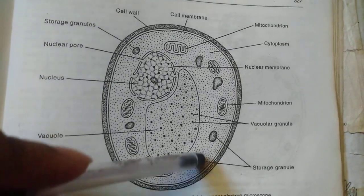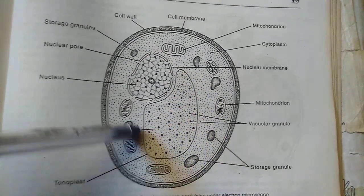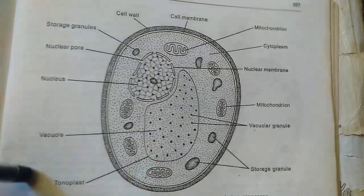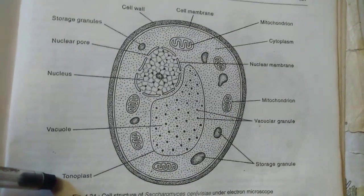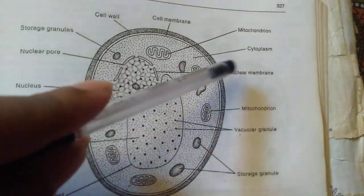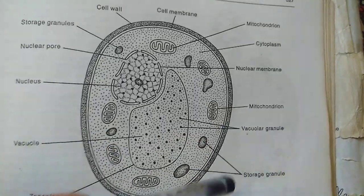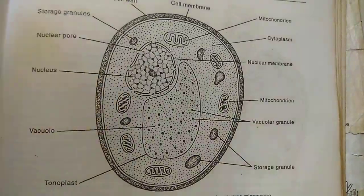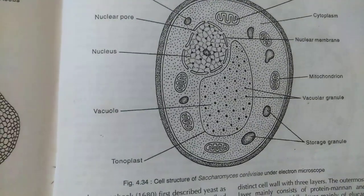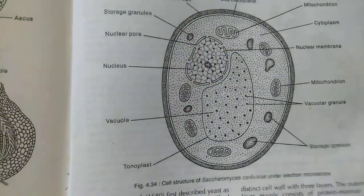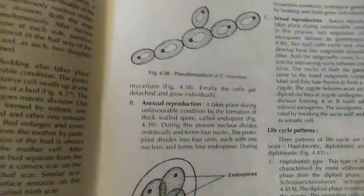The cell structure consists of a large vacuole in the protoplast. The membrane of the vacuole is known as the tonoplast. The nucleus and cell organelles like mitochondria, cytoplasm, and storage granules are also present. This concludes the cell structure of Saccharomyces.